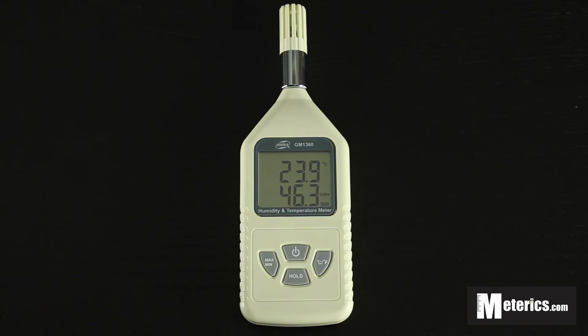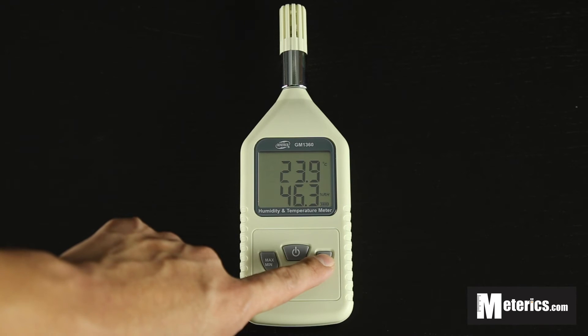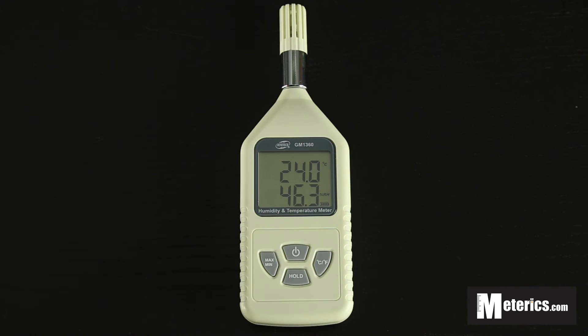So what you want to do first is you want to set the temperature units so you can choose between Celsius or Fahrenheit. Just press that once, go Fahrenheit and press that again you go back to Celsius.